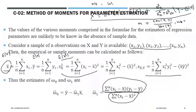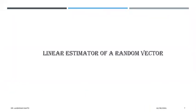One more thing: with the linear model structure, by the law of iterated expectation the means of X and Y lie on the linear function. So the mean of X and Y both lie in the linear curve structure, and through that we can easily get the estimate of omega_0. Next, we will discuss linear estimation of a random vector with least mean square error.